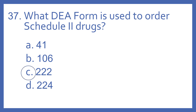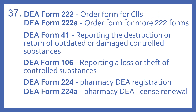And the answer is C. 222. The DEA form 222 is the order form for C2s. DEA form 222A is the order form for more 222 forms.